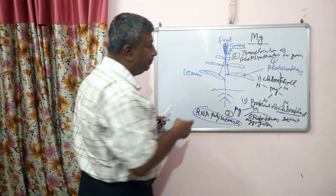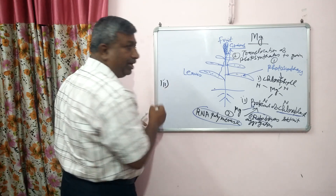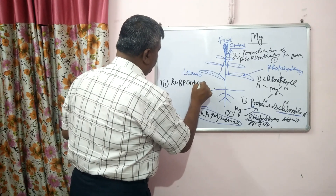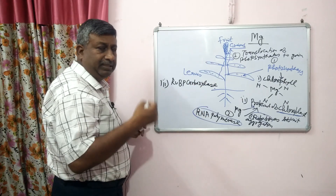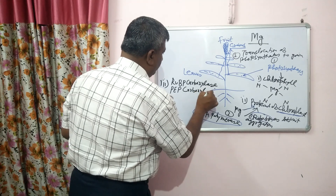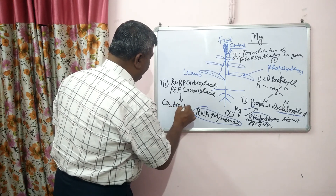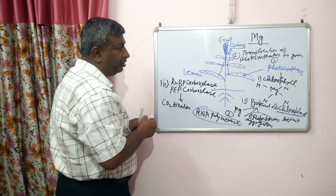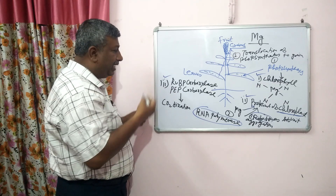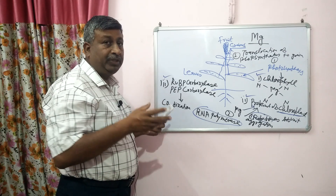The third factor in photosynthesis is that magnesium is required for the activity of RuBP carboxylase and PEP carboxylase. RuBP carboxylase is required in C3 plants and PEP carboxylase is required in C4 plants. These enzymes help in CO2 fixation. So magnesium activates these enzymes and enables more CO2 fixation, meaning more photosynthesis.